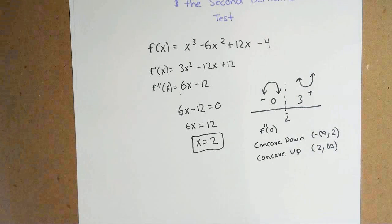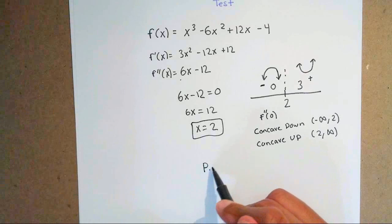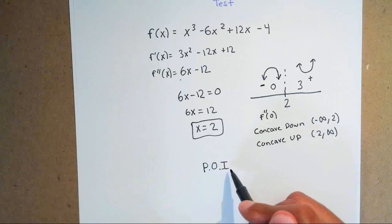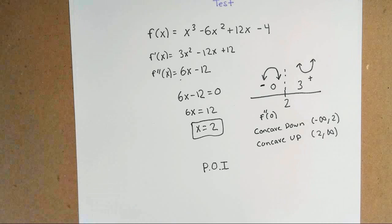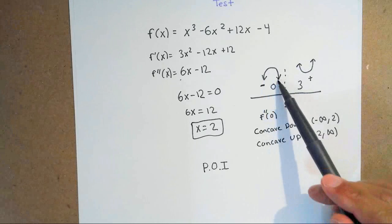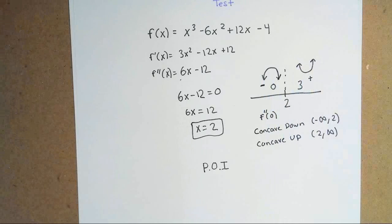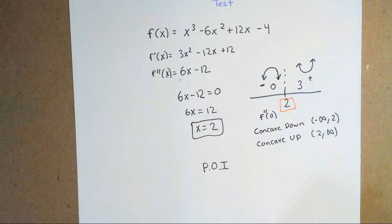The way we find a point of inflection — which you'll often see written as POI — is if your concavity is changing from concave upward to downward, or downward to upward. When you have a change in concavity, that's when you have a point of inflection. Looking at this example, it goes downward then upward, so at x equals 2 you have a point of inflection.